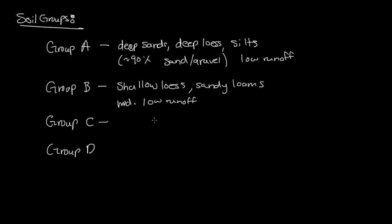Group C has a lot of clay loams, shallow sandy loams, and soils with low organics. Group C soils have usually less than 50% sand, and they have moderately high runoff when wet.